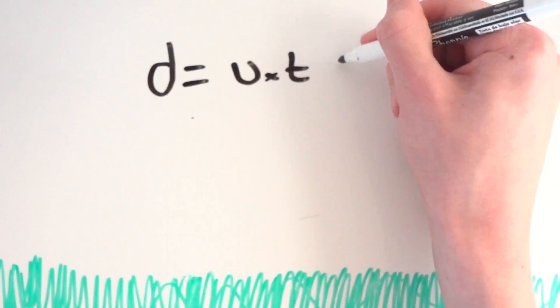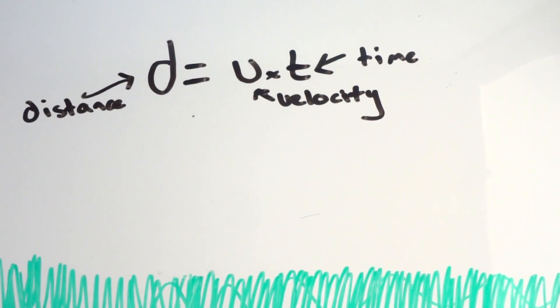The metre is defined as the distance travelled by light in a vacuum in one over 299,792,458 seconds. You can confirm this for yourself right now, using some basic physics.